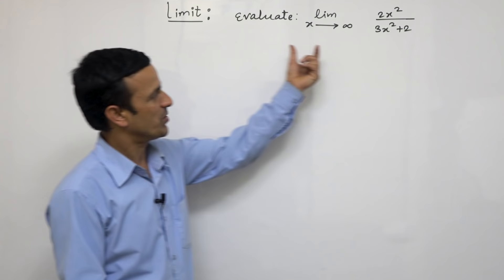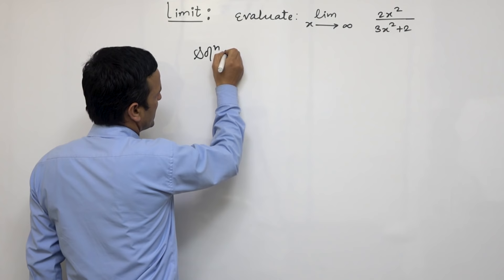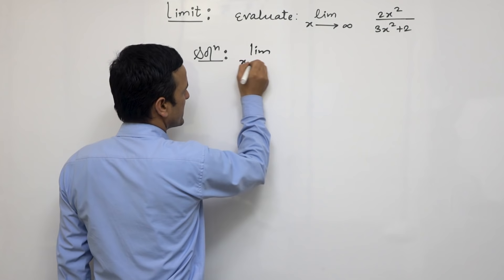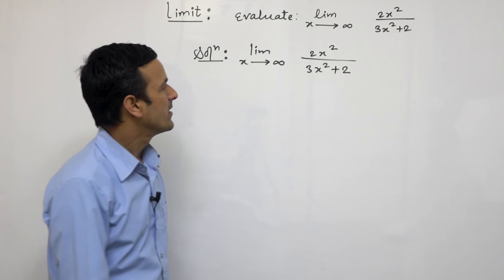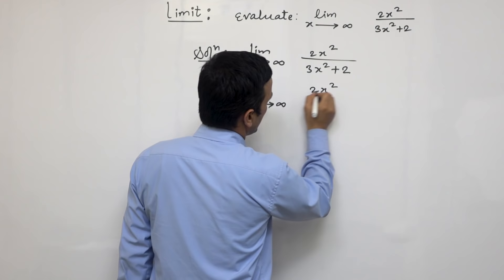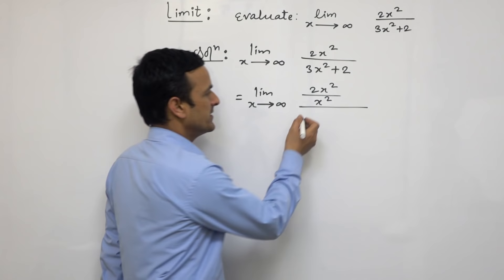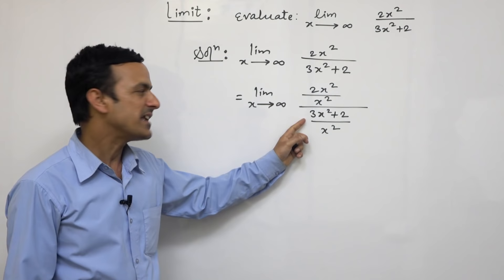Let us know how to solve this question. So, how to solve this question? Here is the solution. We have the question: limit x tends to infinity, 2x squared divided by 3x squared plus 2. For this question, we can divide it by x squared in both numerator and denominator. We have to divide the numerator and denominator by x squared.